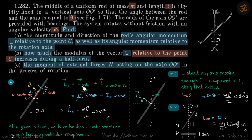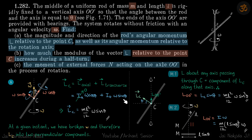So Lc vector is broken into two perpendicular components: L_axial plus L_transverse. We write L_axial = I_axial · ω·cosθ, and L_transverse = I_transverse · ω·sinθ. The moment of inertia about the axial direction is zero, and the moment of inertia about the transverse direction is ml²/12. Therefore, Lc = (ml²/12) · ω·sinθ. That is our angular momentum about point C.